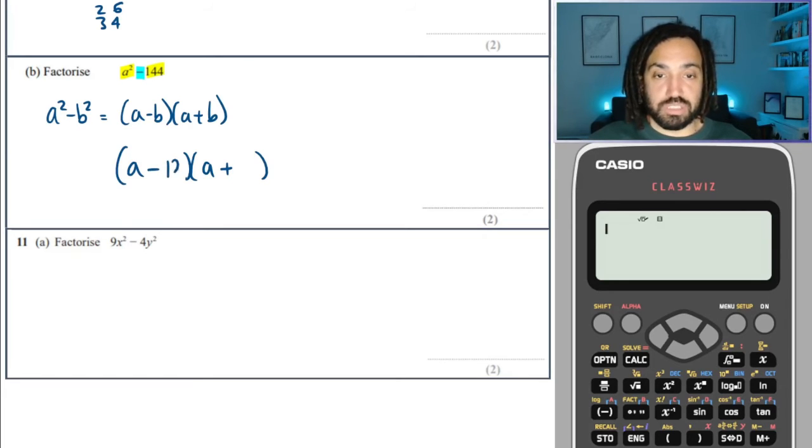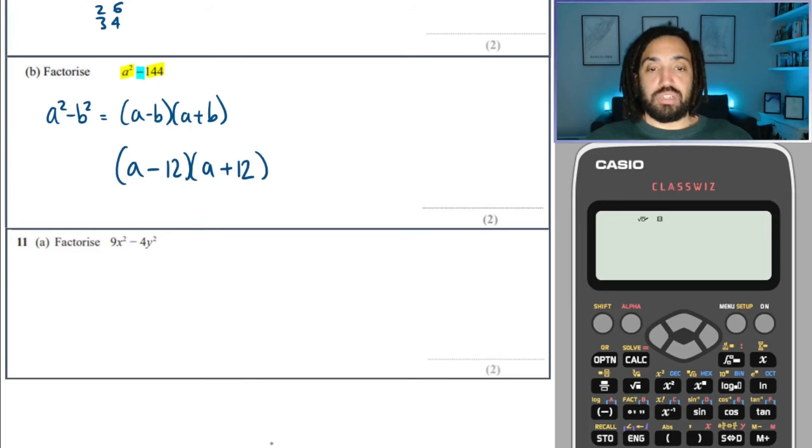There's a minus and a plus. And then we take the square root of 144, which is 12. And we're done. It's factorized.